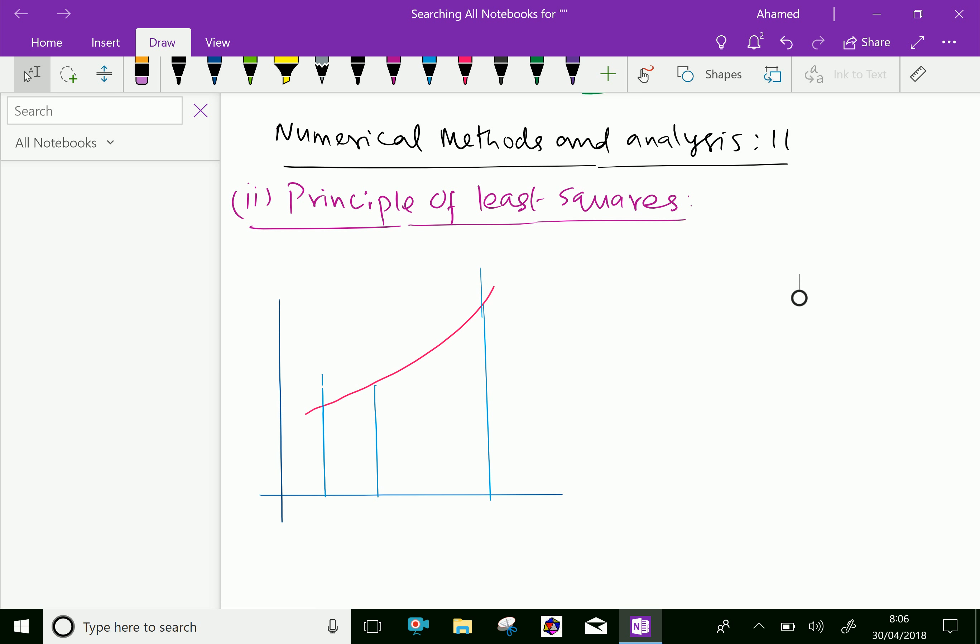In the method of group averages, it is unable to get a unique value for the constant in the curve of best fit. So we require some other methods to get the best value of constants. This principle we can discuss is the principle of least squares method.